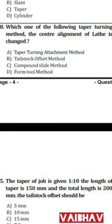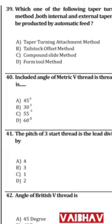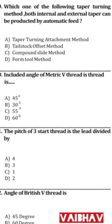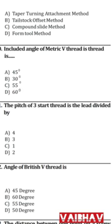Question 39: Which taper turning method allows both internal and external tapers to be produced? The answer is — taper attachment method. Question 40: The included angle of a metric V-thread is 60 degrees — answer is 60 degrees.